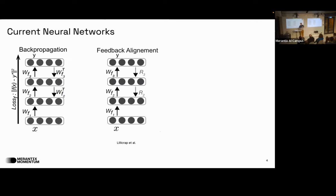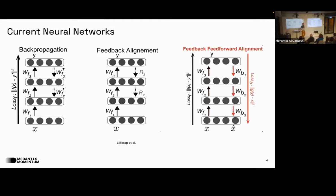The Feedback Feedforward paper takes this idea further, asking: why do we need random weights? The brain doesn't have fixed weights from birth — it trains throughout life. So what if we actually learn these backward weights? They have forward weights for normal inference, and then backward weights to estimate the gradient in the backward pass.